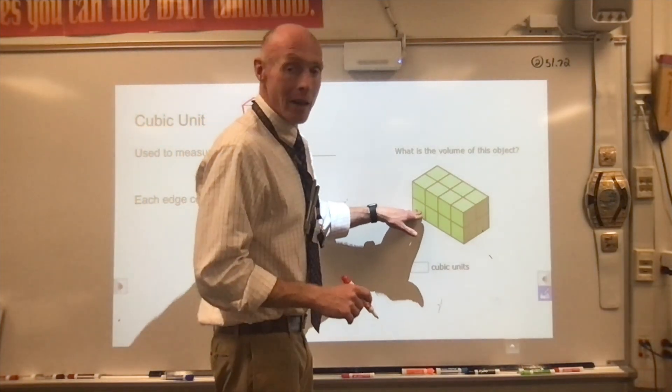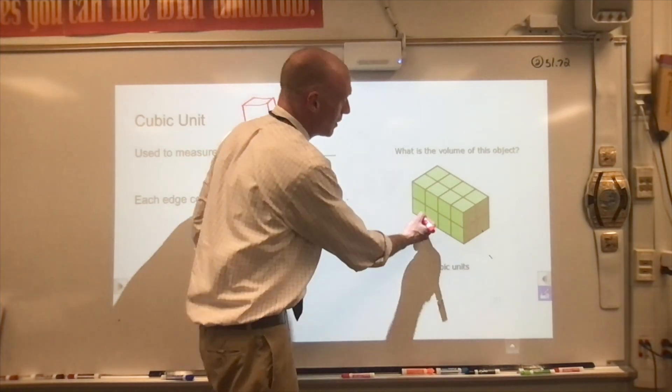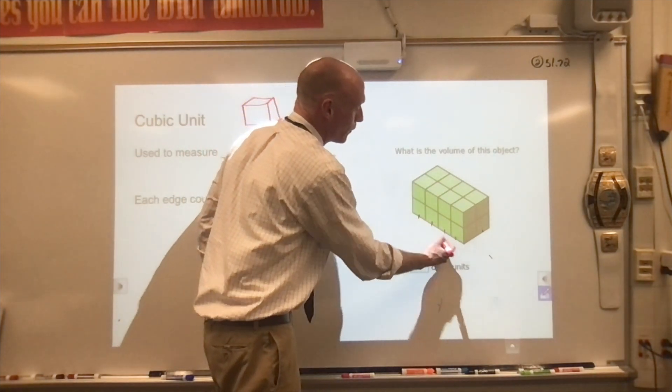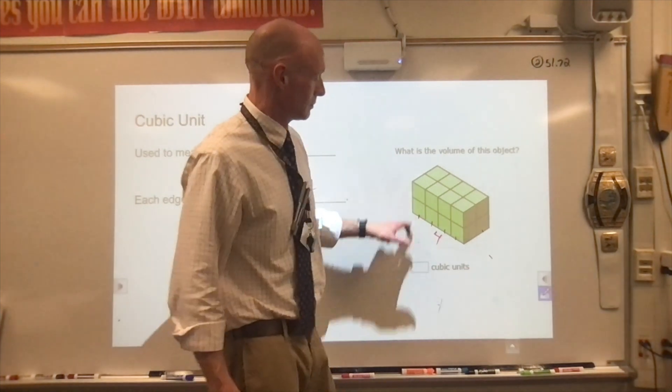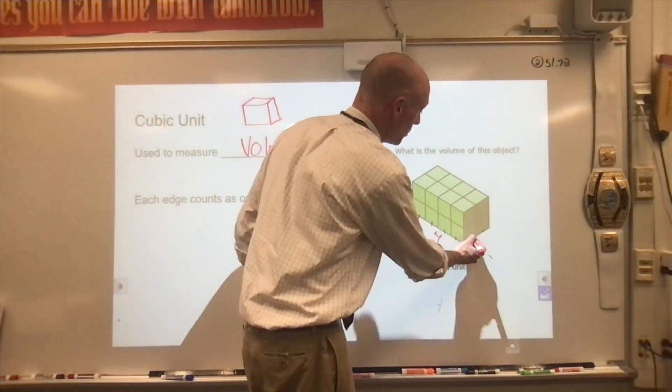But I'm going to show you a way to do it without having to see all of the squares. Check out your bottom layer. Your bottom layer is going to be one, two, three, four going across. Our width is going to be one, two.